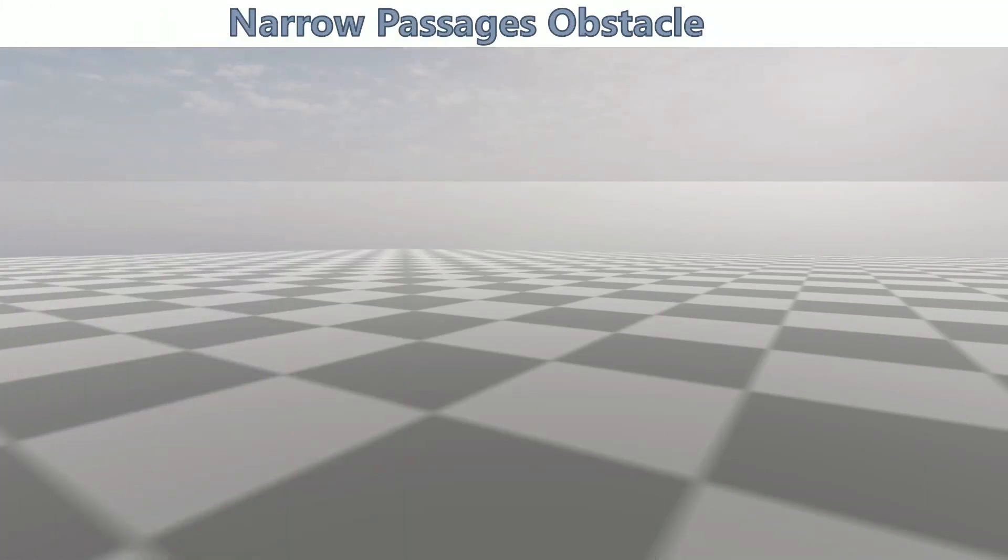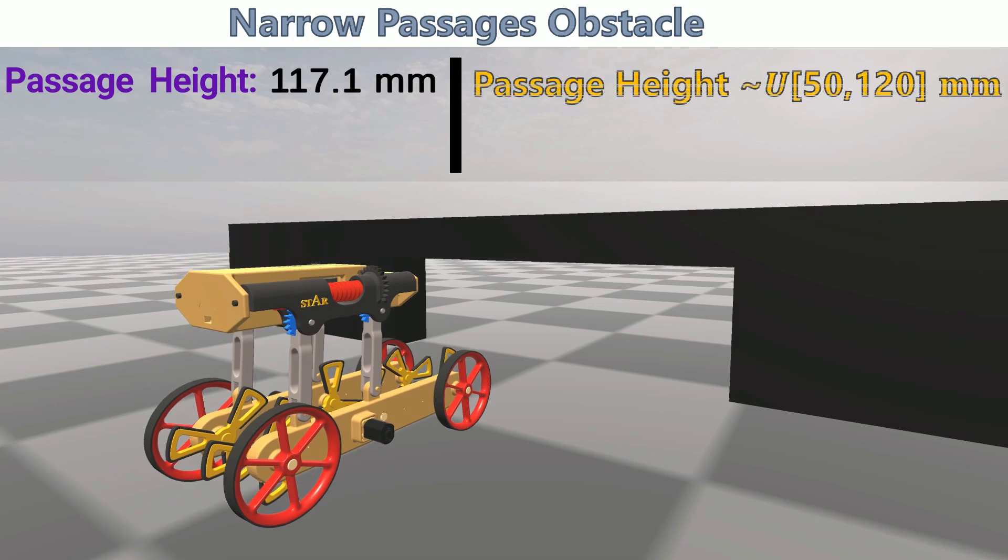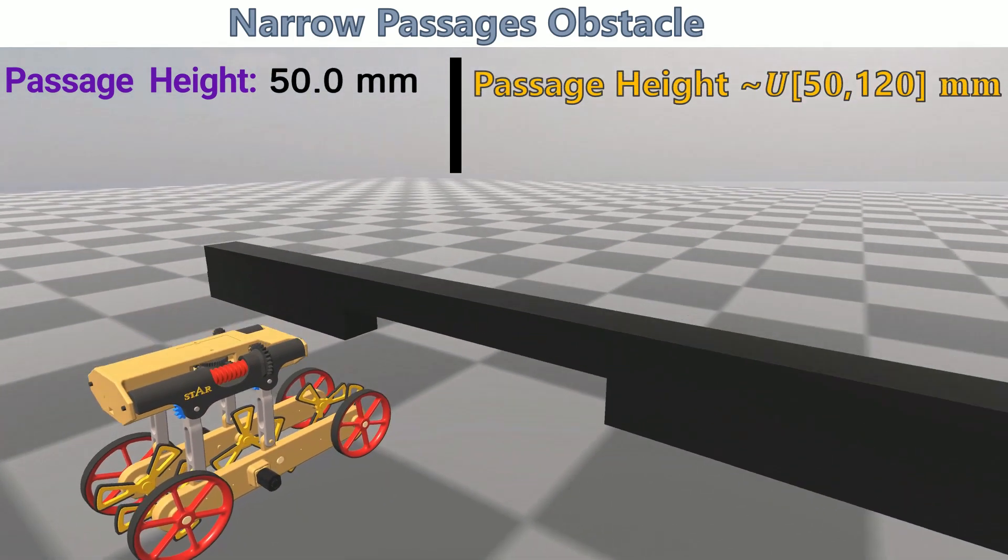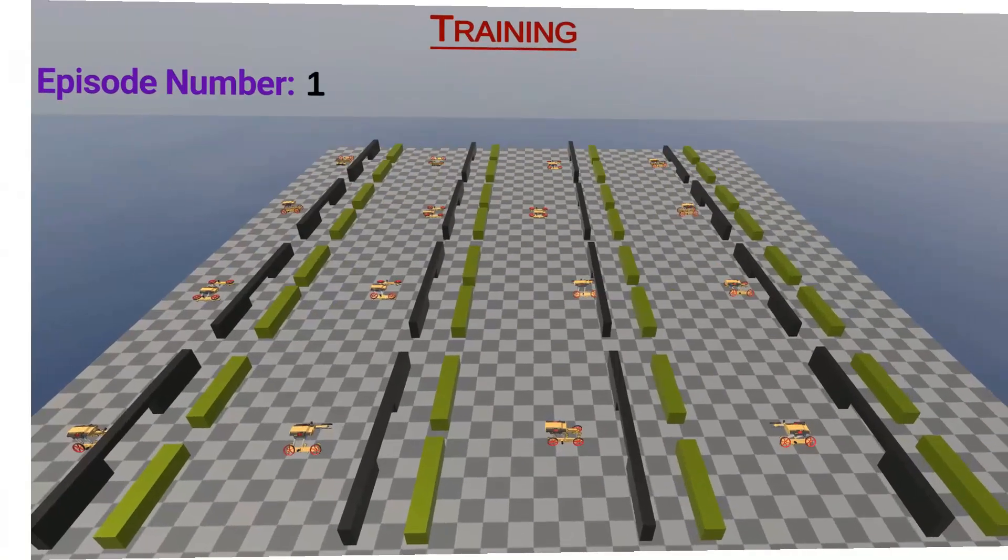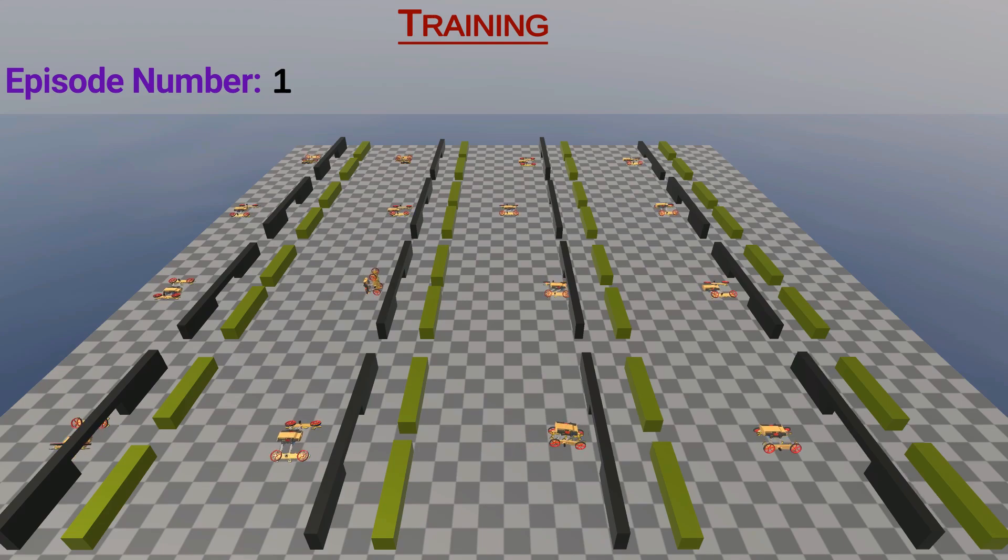To verify the obtained results, we compared the different reward functions in an additional obstacle environment. This environment includes a two-stage narrow passages obstacle. The beginning of the learning process is presented.